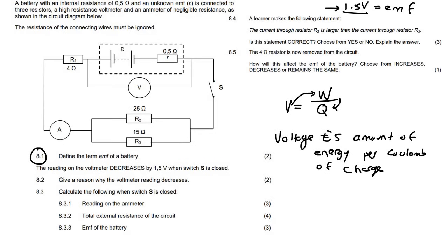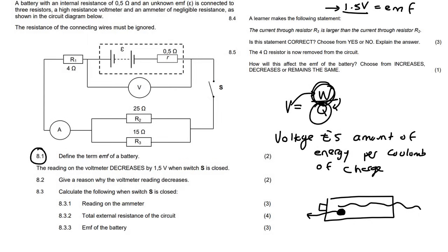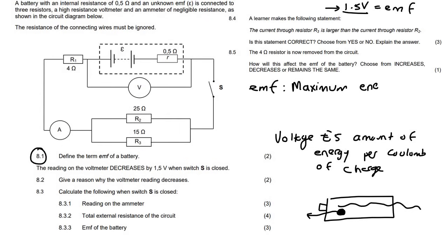If you have a battery and electricity starts flowing through it — let's say we have a tiny little electron — when that electron moves through the battery, it will be given 1.5 joules of energy, because voltage is the amount of energy per charge. So the actual definition of EMF is the maximum energy per coulomb of charge.